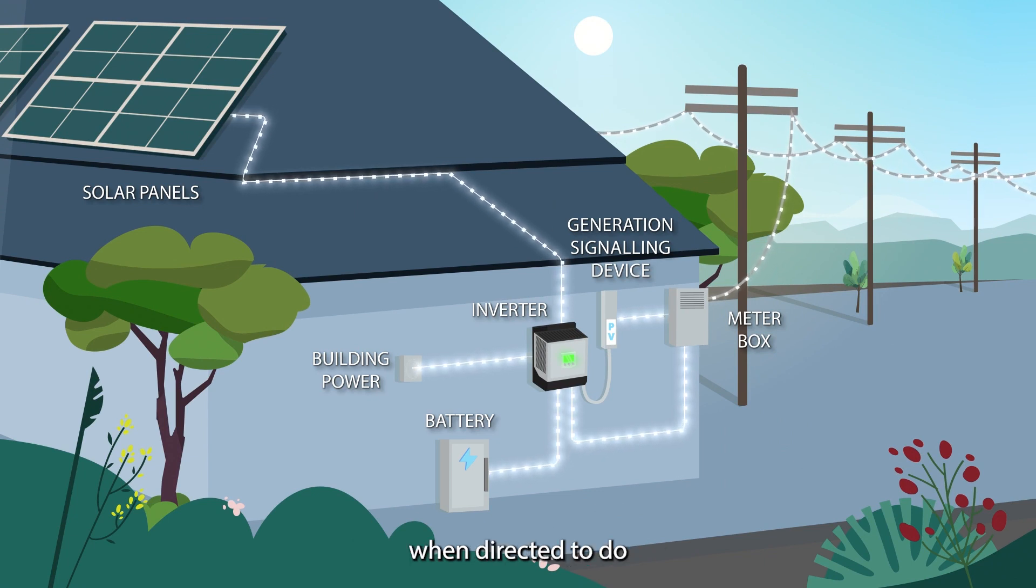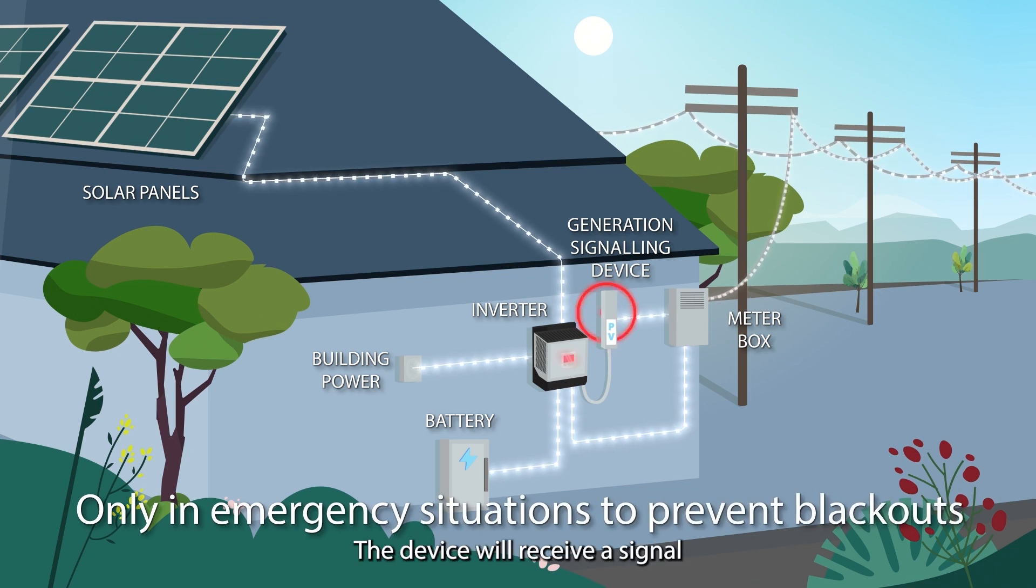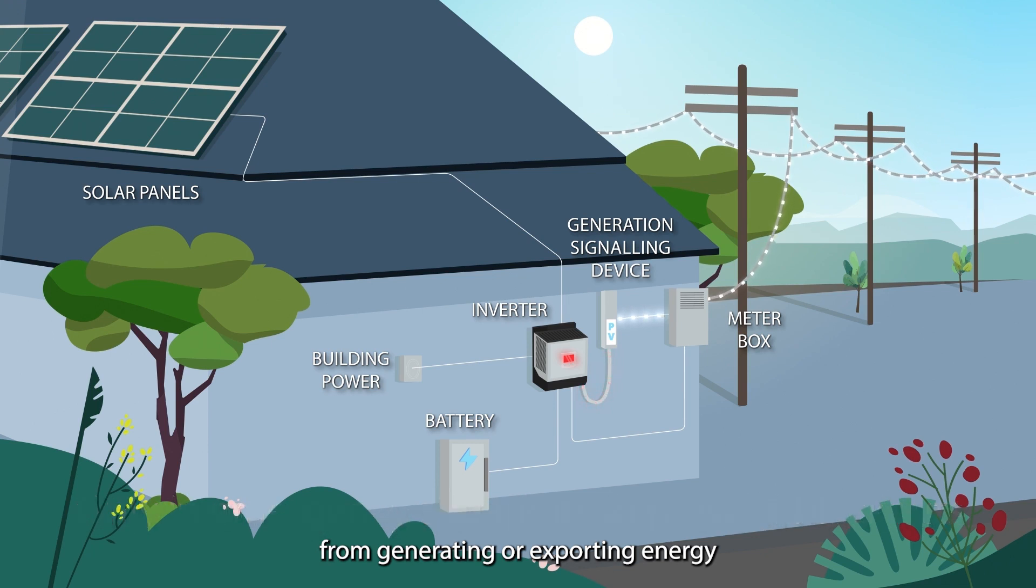The device will receive a signal that temporarily stops the system from generating or exporting energy until the emergency has ended, when the system resumes normal operation.